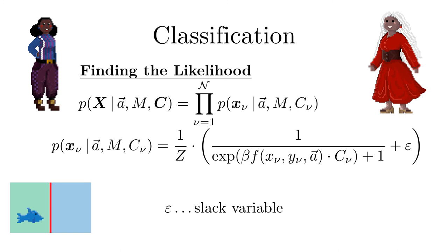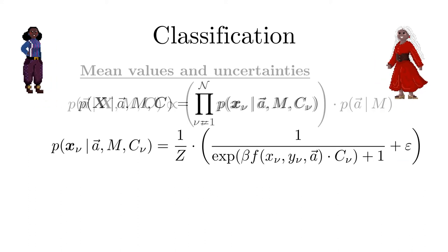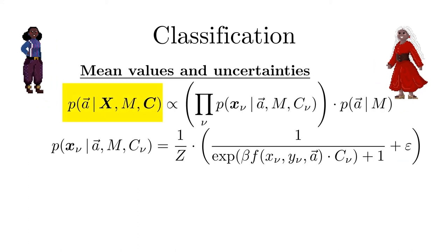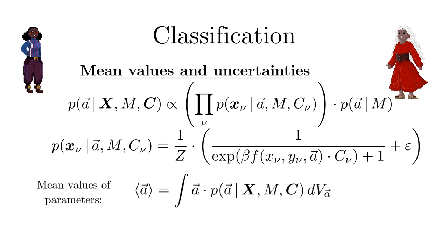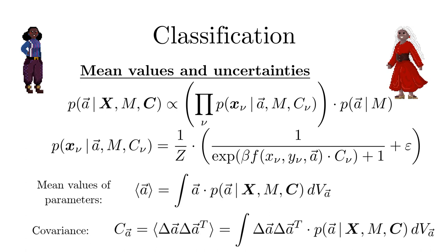Epsilon makes the classification outlier tolerant. So by now we have all terms of the probability for the model parameters. From that we can determine the mean values of the parameters. A result is only as good as its uncertainty. It can be computed as follows.